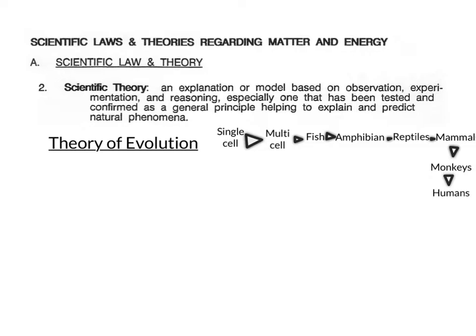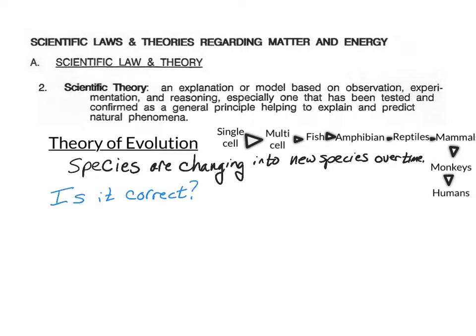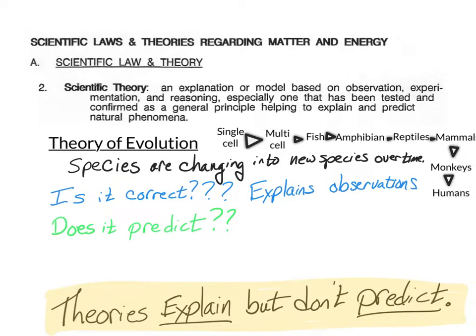So basically, we've had this change, evolutionary change, of creatures. So, what does the theory of evolution say? It just says that we're changing over time. The species are being developed and grown over time. Is the theory of evolution correct? Who knows? We don't know for sure. It is just an explanation that tells us what we think happened from what we've seen. Does it predict what's going to happen next? No. Scientific laws predict what will happen next. Scientific theories don't.